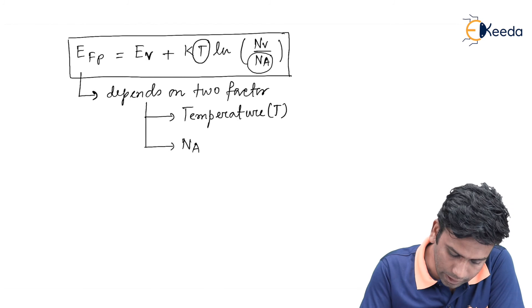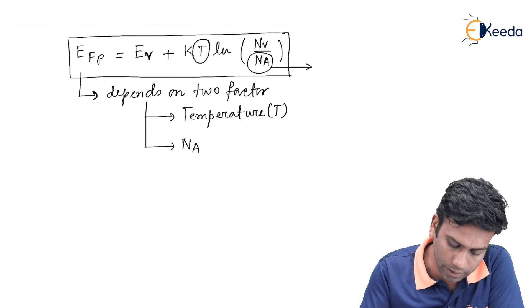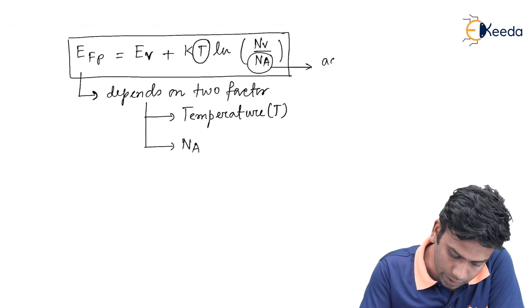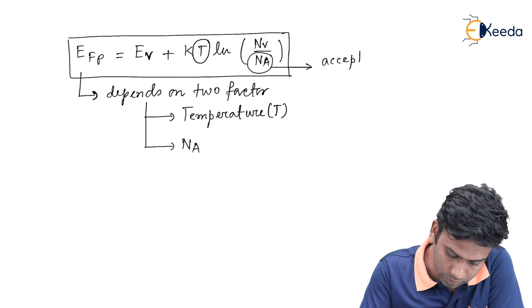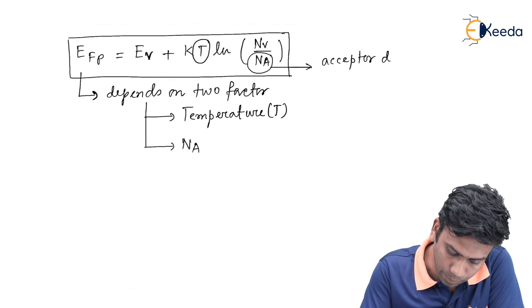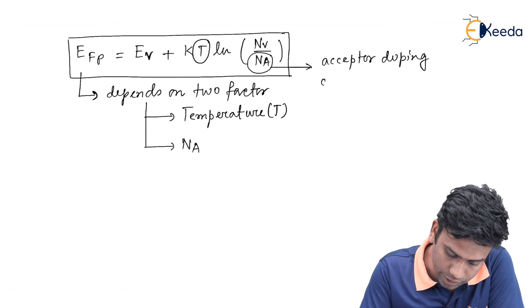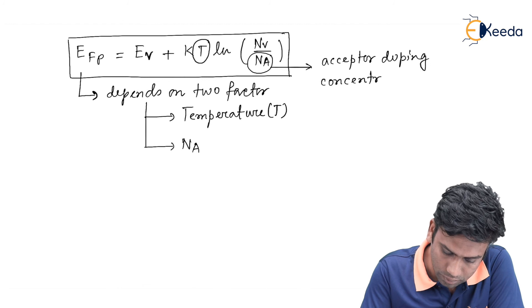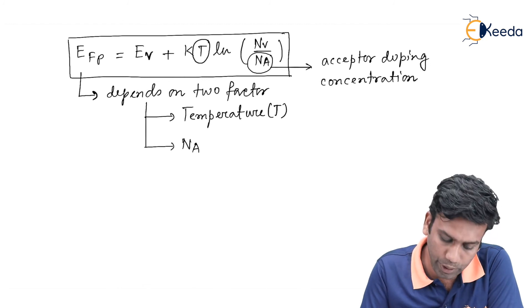And this Na was the acceptor doping concentration in the p-type semiconductor.